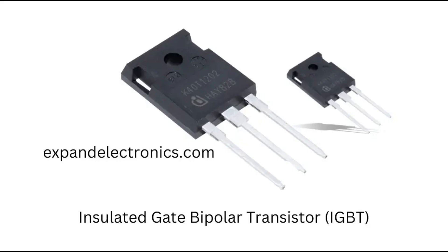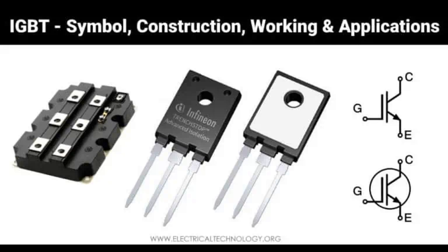Switching: Turn on — when a positive voltage is applied to the gate, the gate channel capacitance forms and turns the device on, allowing current to flow between the collector and emitter. Turn off — when the gate voltage is removed or reduced to a threshold level, the channel collapses and the device stops conducting. This process is controlled by the gate capacitance and the recombination of carriers in the P-well and N-drift region.